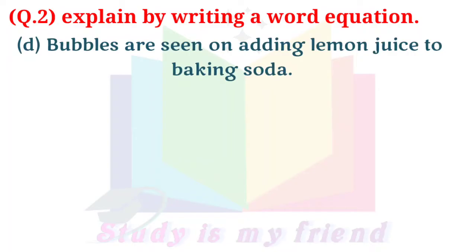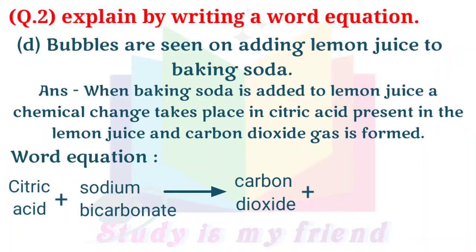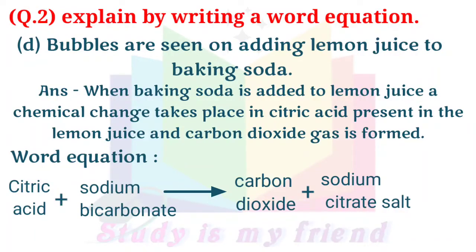D. Bubbles are seen on adding lemon juice to baking soda. Answer: When baking soda is added to lemon juice, a chemical change takes place — citric acid present in the lemon juice reacts and carbon dioxide gas is formed. Word equation: Citric acid + Sodium bicarbonate → (Reaction) → Carbon dioxide + Sodium citrate salt.